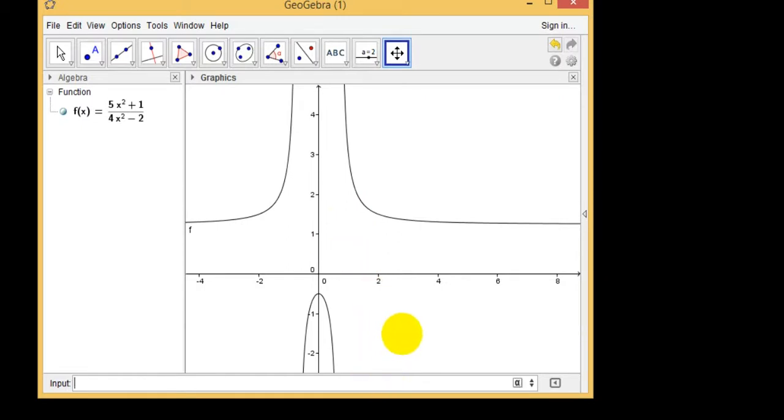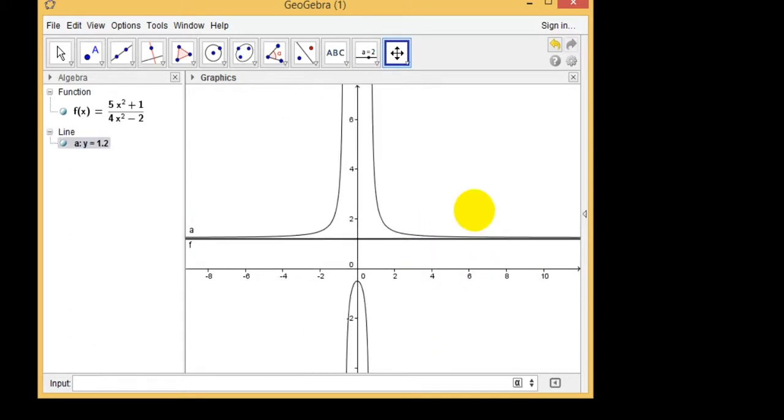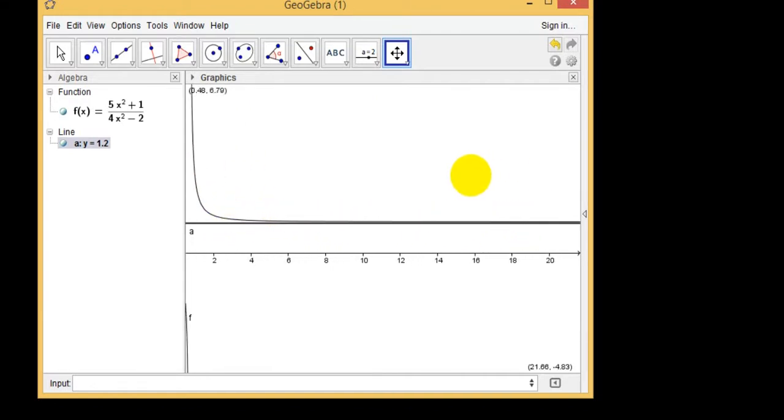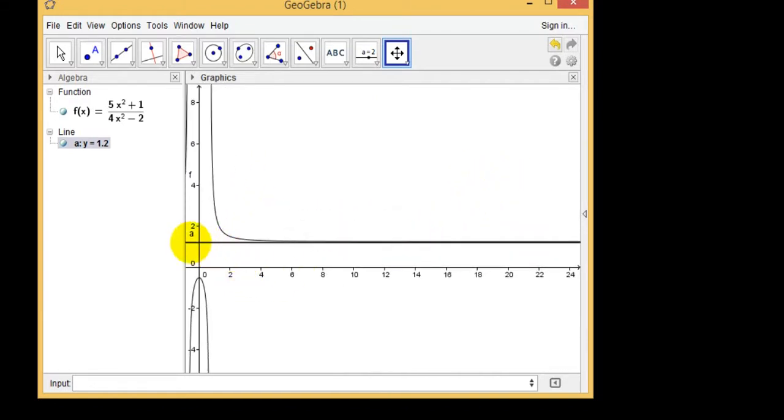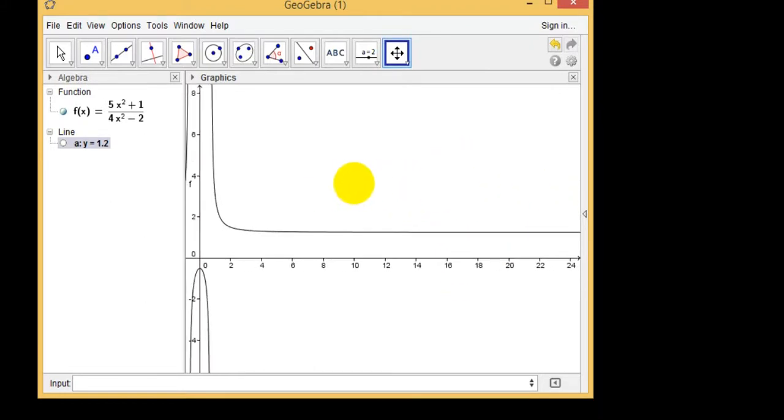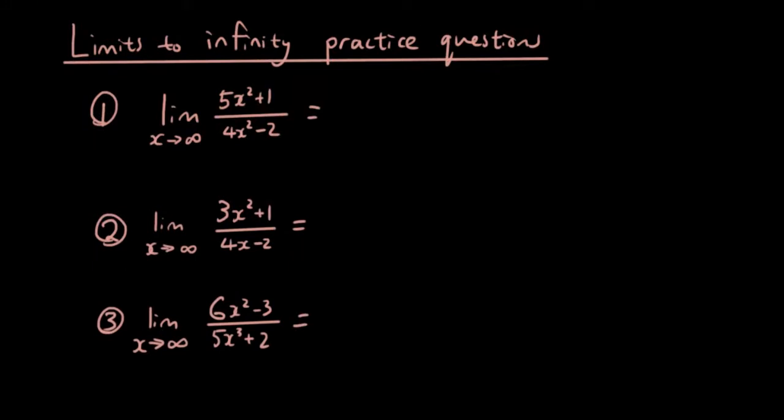So if I draw a line, y equals 1.25. This line that the graph keeps approaching pretty much stops at this line, y equals 1.25. So the answer is 1.25, because as x approaches infinity, as x gets bigger and bigger, y stops at 1.25.